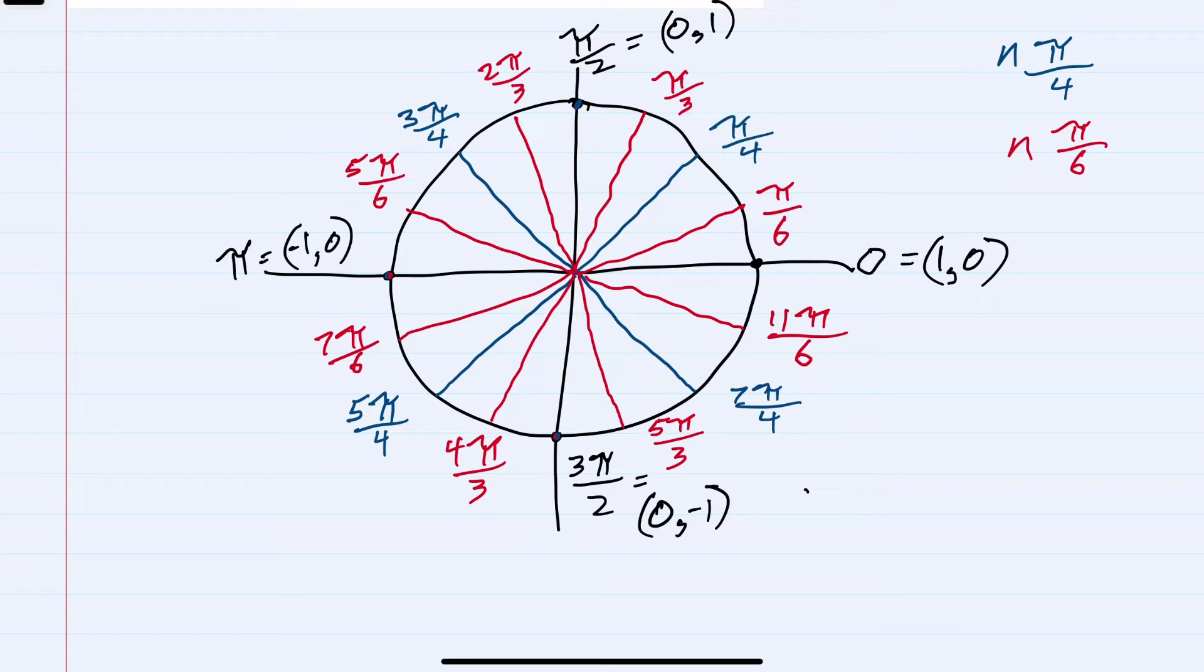But then to find the terminal values for each one of these, there's a nice pattern. Remembering that pattern for quadrant one here will help us find any of these other special values. As we move around from the positive x-axis, I can see that the x coordinate starts out at one and then makes its way to zero by the time we get to π/2.